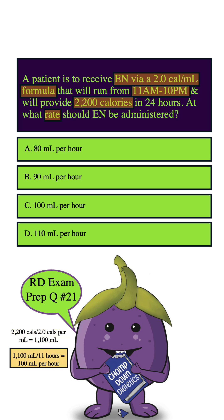Then we're just going to take that 1,100 mls and divide it by the amount of hours that the formula was going to run, which is a total of 11 hours. So 1,100 divided by 11 equals 100 ml per hour.